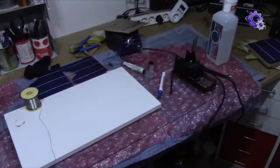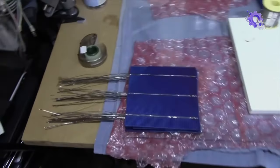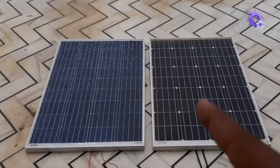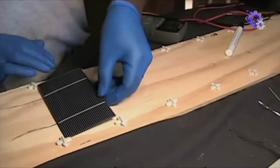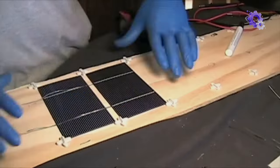First, designing the layout. Assessing available space and selecting the appropriate type of solar panel are crucial initial steps. Whether you're opting for monocrystalline or polycrystalline cells, understanding your energy needs and available space helps in determining the layout.